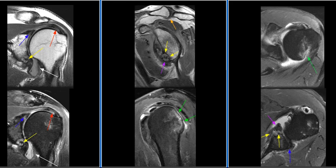This case is a 55-year-old male with a history of recent trauma. MRI examination of the shoulder shows an impaction fracture of the posterolateral humeral head consistent with a Hill-Sachs lesion.